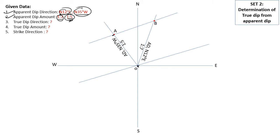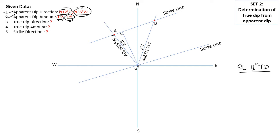Now we have to find the true dip direction. What is the relation between the strike direction and the true dip? They are perpendicular to each other. So once they are perpendicular, if I draw a perpendicular line to the strike line from point O, I will get the true dip direction as well as the amount. This perpendicular line falls at a point which I will name as C.